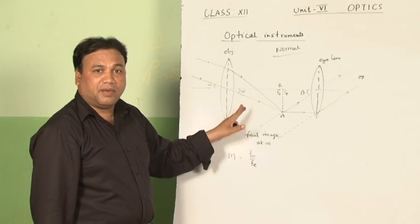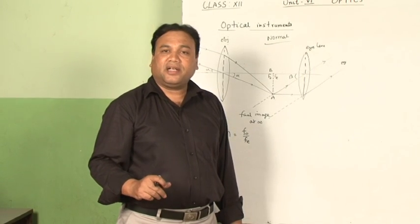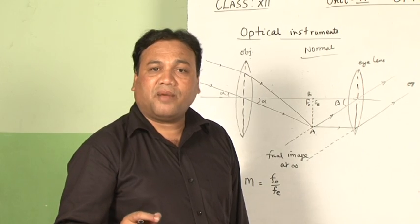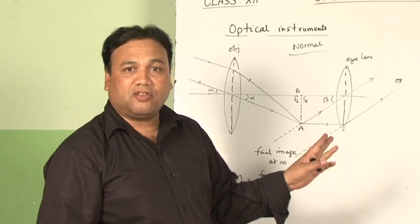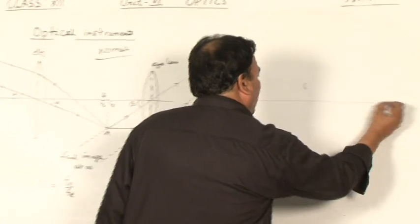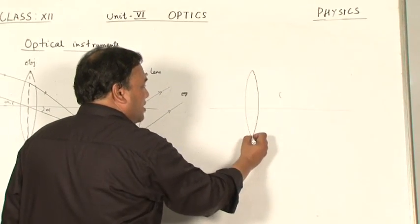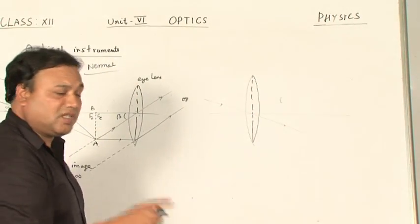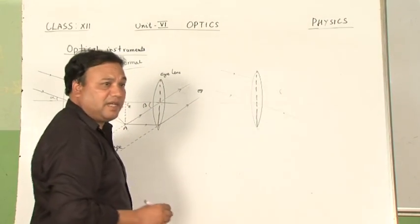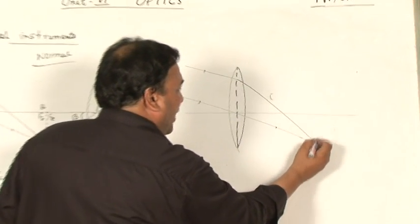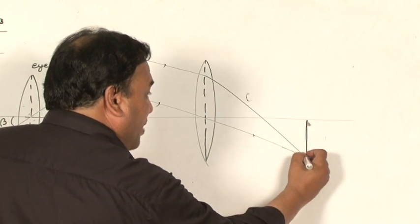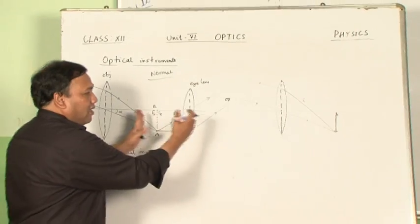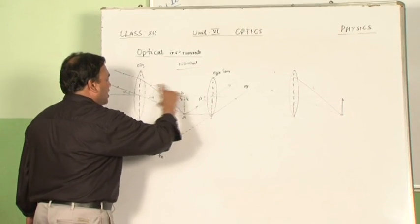This is how the astronomical telescope in normal adjustment works. Now, the same astronomical refracting type telescope will be used in another way - when the final image is formed at the least distance of distinct vision. I proceed in the same way: I have taken one convex lens of larger focal length. One ray coming from the object at infinity passing through the center goes straight undeviated. The second ray, parallel to the first, after refraction meets at a point on the focal plane forming the first image. This first portion is the same in both cases. In the second part, we move the eye lens a bit closer towards the objective lens.